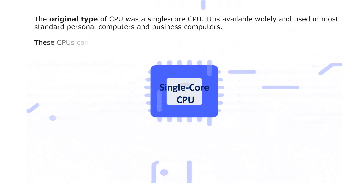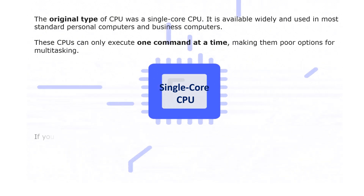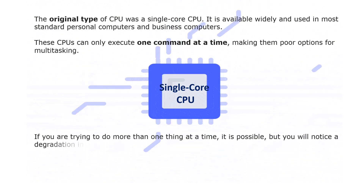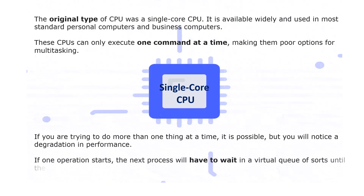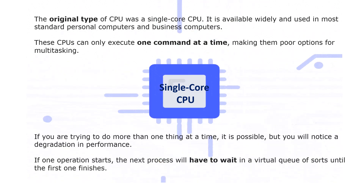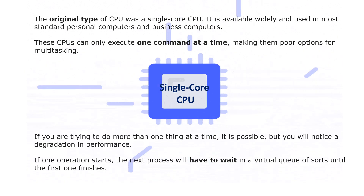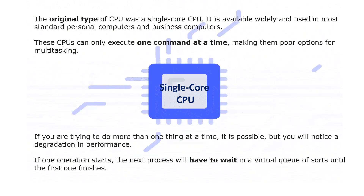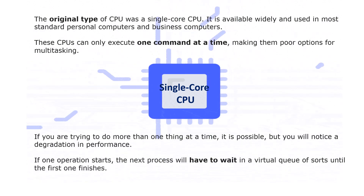First is the single core CPU. The original type of CPU is the single core CPU, and it is widely available and used in most standard personal computers and business computers. These CPUs can only execute one command at a time, making them poor options for multitasking. If you are trying to do more than one thing at a time, it's possible, but you will notice a degradation in performance.